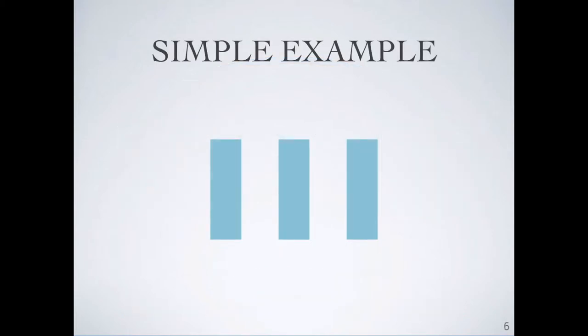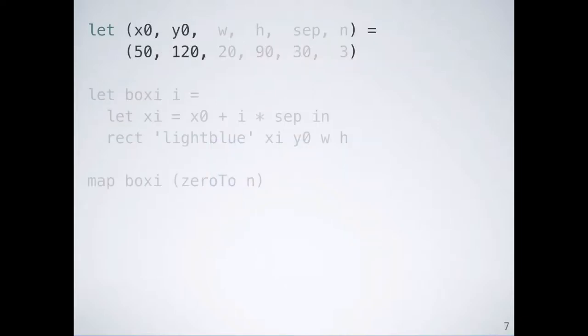Let's start by looking at a simple example. Say we want a program that uses a loop to draw identical, evenly spaced boxes. Our design has several parameters. There's the x and y position of the first box, the width and height for each of the boxes, the amount of separation between the boxes, and finally the number of boxes.